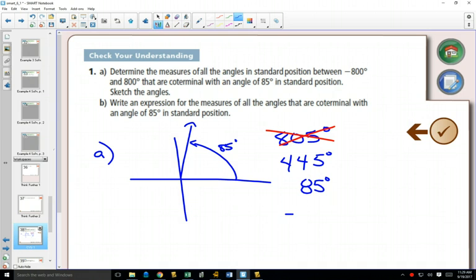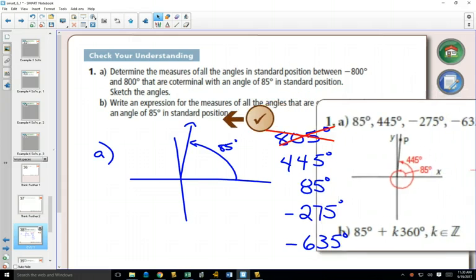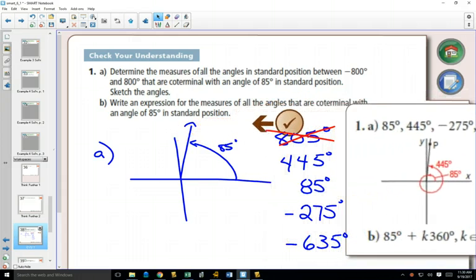I'm going to get -275°. If I subtract 360° again, I'm going to get -635°. If I would subtract 360° one more time, I would go over. Quick little check with the checkmark to make sure my mental math was okay. Yes.